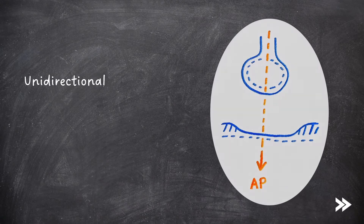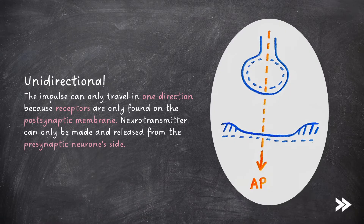Next we need to know about the principles of unidirectionality, summation and inhibition. Cholinergic synapses are unidirectional. This is because the impulse can only travel in one direction, because receptors are only found on the post-synaptic membrane. Neurotransmitter also can only be made and released from the pre-synaptic neuron.